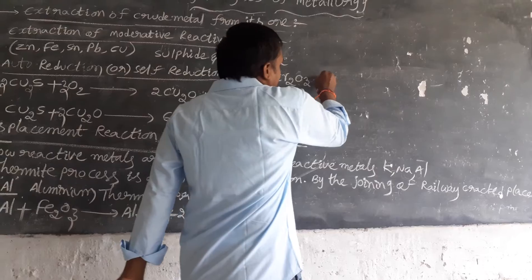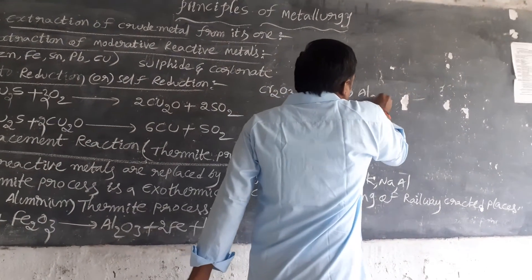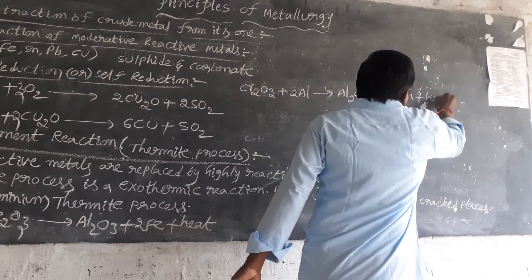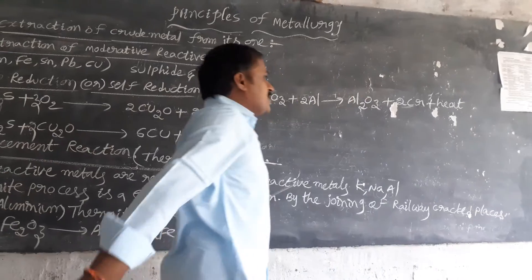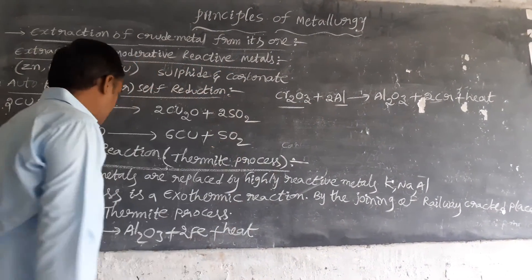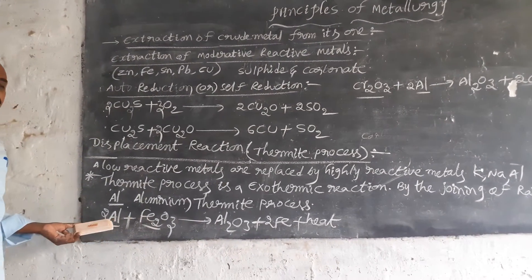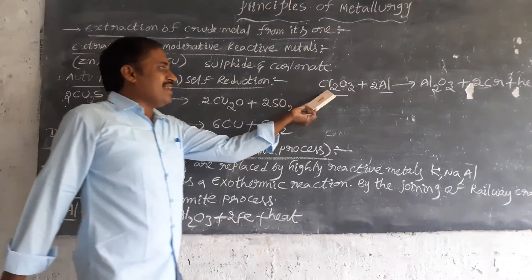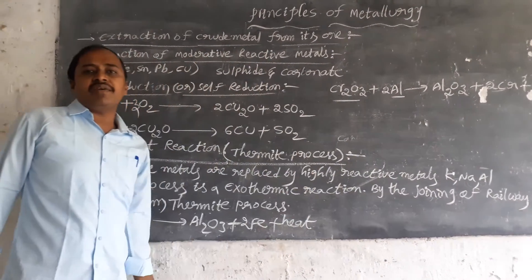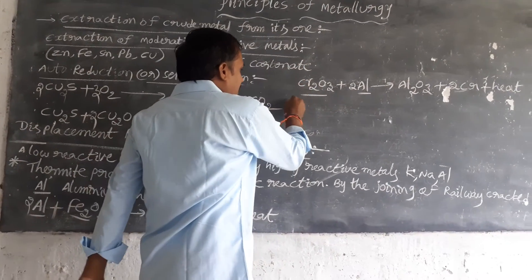Another example is Cr2O3 plus aluminium gives Al2O3 plus 2 Cr plus heat. In these two reactions, Fe is replaced by aluminium and Cr is replaced by aluminium. That is why these are called displacement reactions.